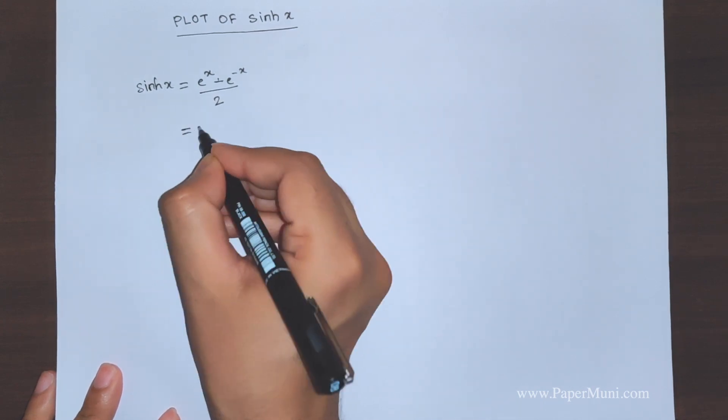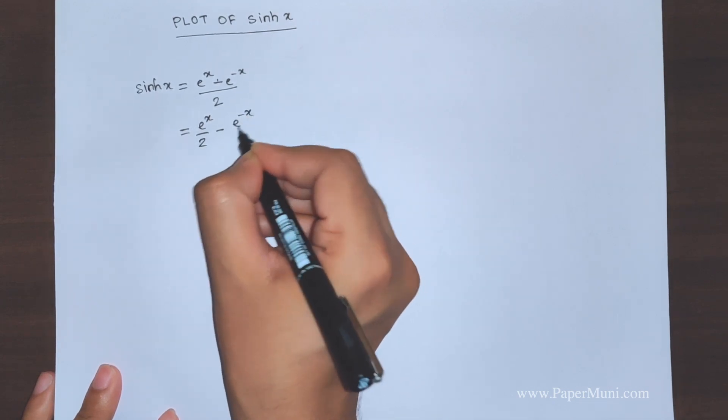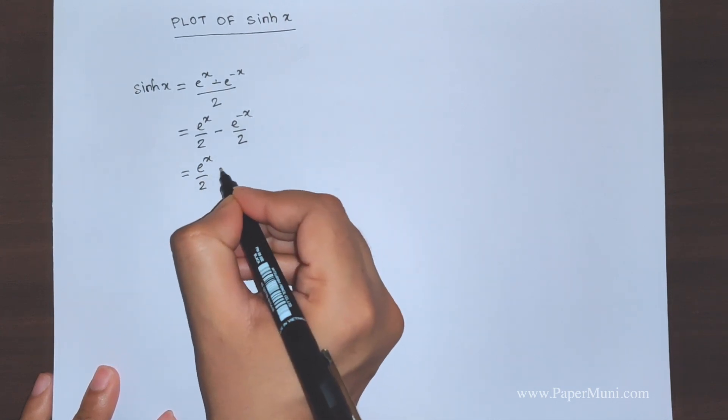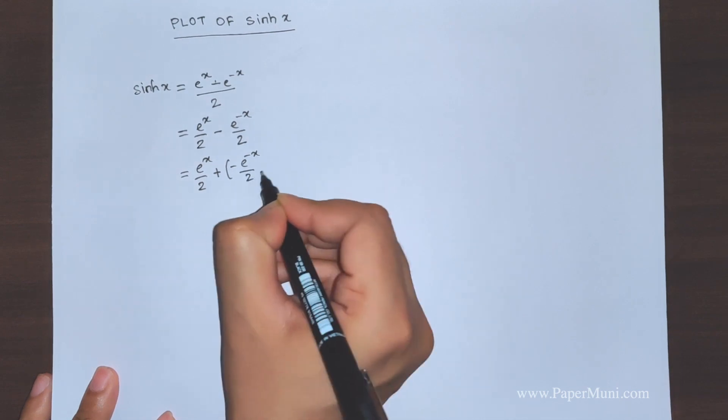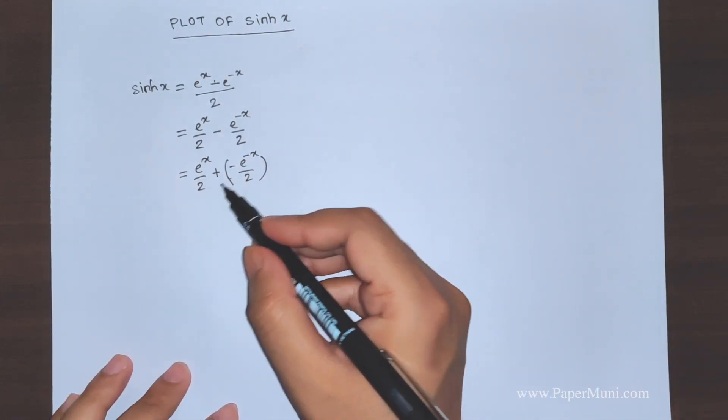One can see that this is e to the power x by 2 minus, you can write like this. Further we can write e^x by 2 plus minus e to power minus x by 2, so we have two graphs and we are adding them.